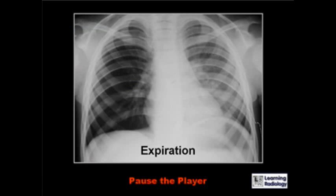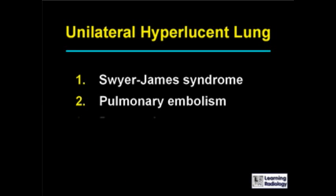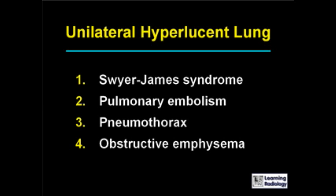The next differential is for a unilateral hyperlucent lung. There are four causes: Swyer-James syndrome, pulmonary embolism, pneumothorax, and obstructive emphysema.